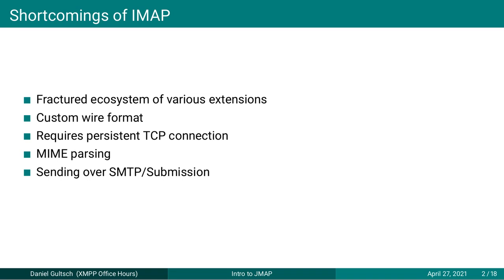Just like XMPP, IMAP is a very old protocol with a bunch of extensions. IMAP doesn't have the word 'extensions' in the name, but it does have a lot of them. You have a similar problem to the one we're seeing in the XMPP world: seemingly every problem has two extensions that solve it — one that you want to use, and one that's widely implemented.